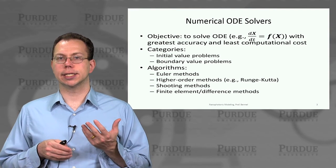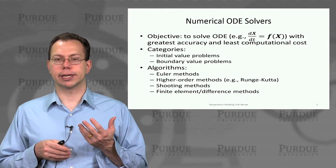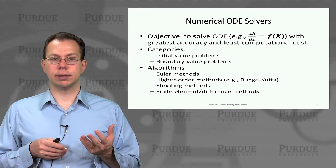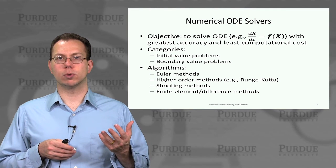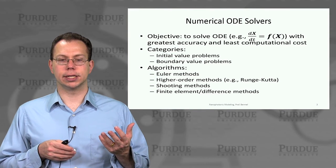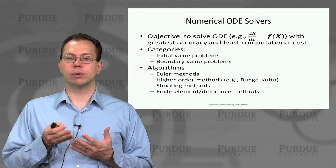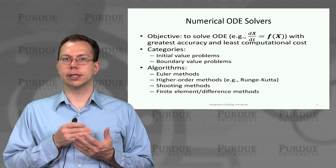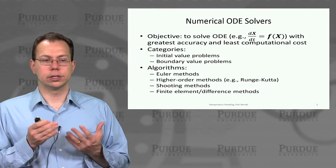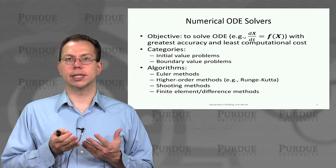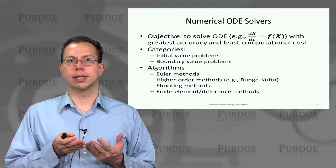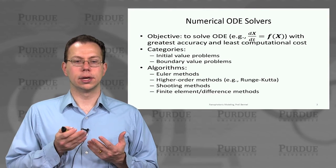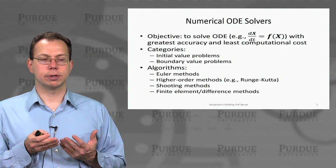If you think about just a standard ODE solver which has a single time derivative, dx/dt equals some f(x), which could be as simple as x, making it exponential time dependence, or something more complex, maybe non-linear. You want to solve this with the greatest accuracy and least computational cost. Ideally this would be something you can solve analytically, but let's assume there's no analytical solution.